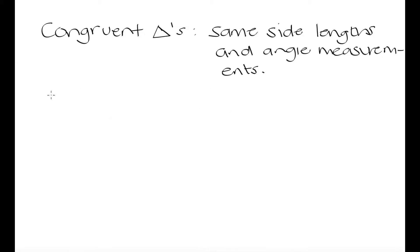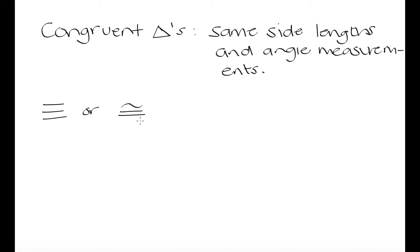The symbol that we use to denote congruency is this symbol. In South Africa we are going to use this symbol to signify that two triangles are congruent, but you might also see a symbol that looks like this. This is also a symbol used to signify congruency — one that is more internationally used — and in South Africa you are going to see both symbols used.